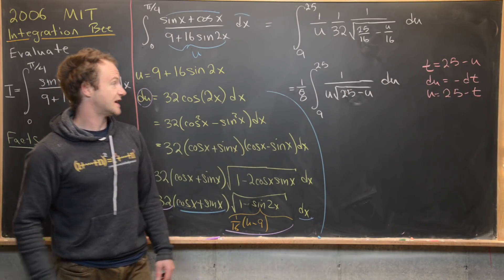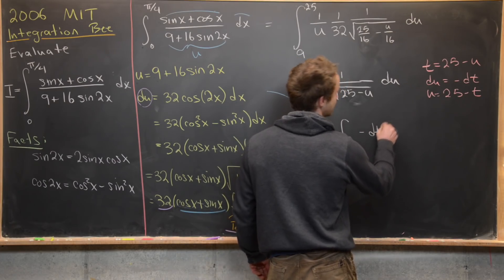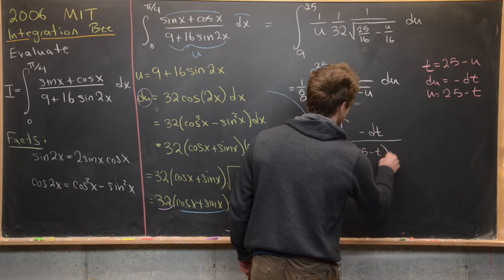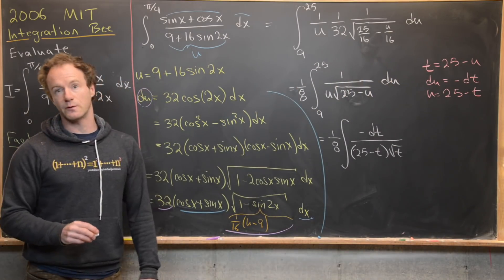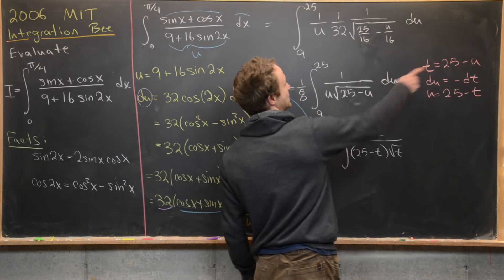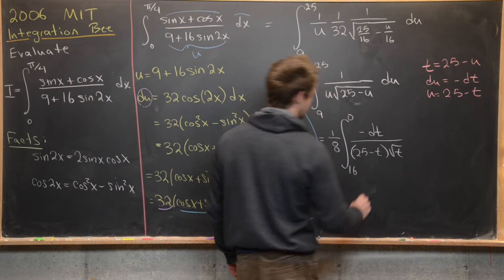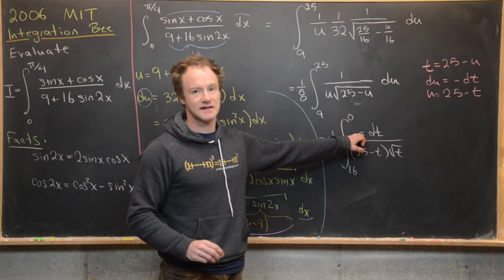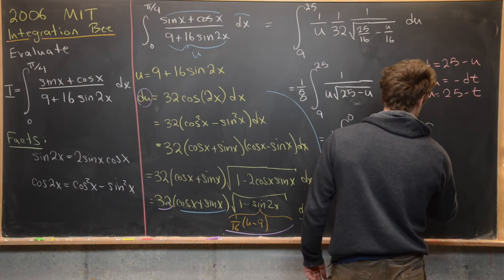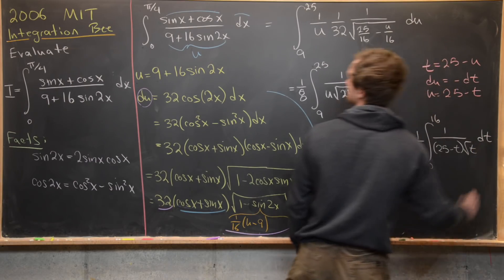After substituting, we get one over 8 times the integral with minus dt over (25 minus t) times the square root of t. The upper bound becomes 0 (when u = 25) and the lower bound becomes 16 (since 25 minus 9 = 16). Taking the minus sign to flip the bounds gives us one over 8 times the integral from 0 to 16 of one over (25 minus t) times the square root of t, dt.